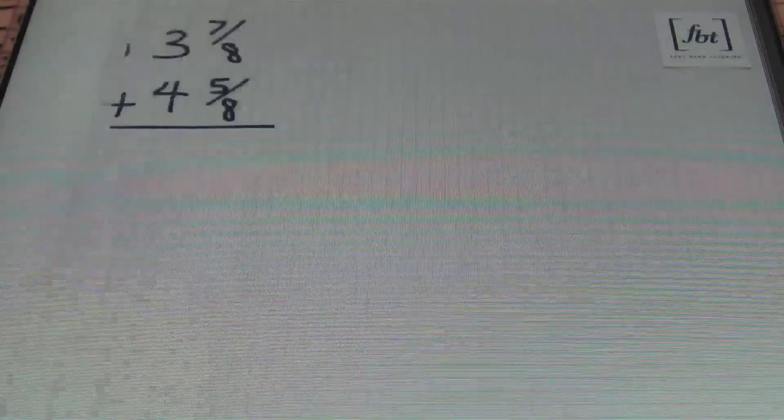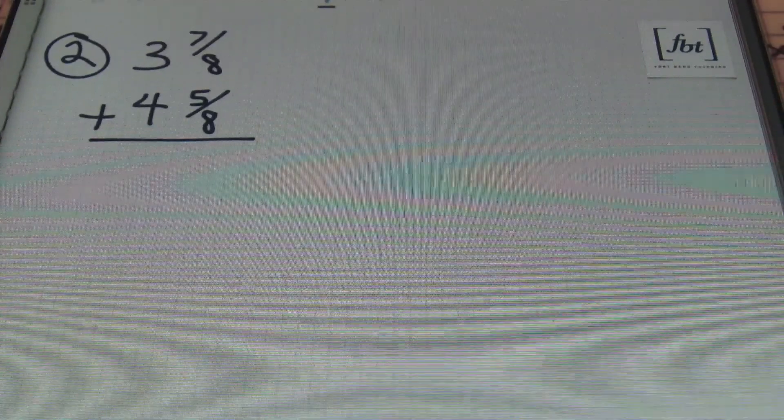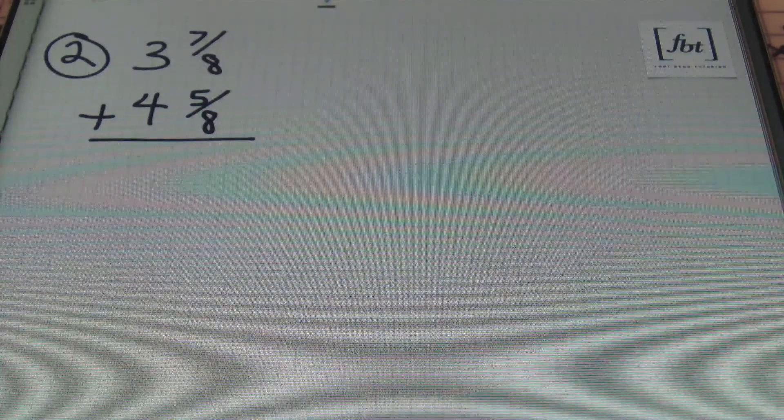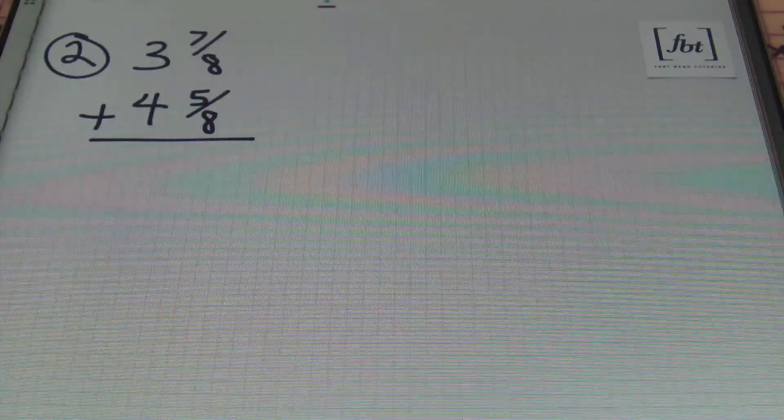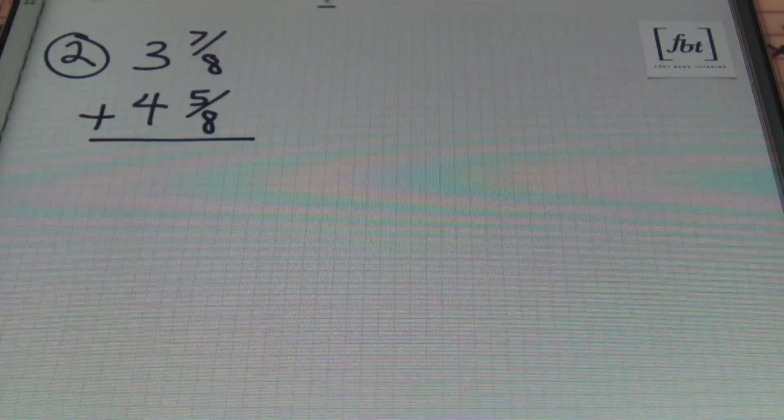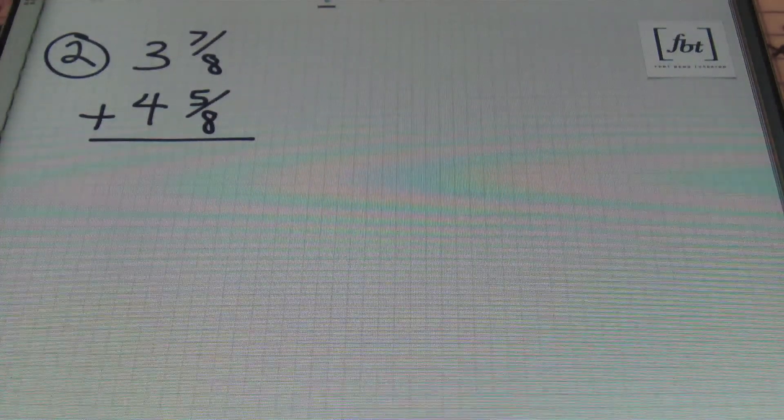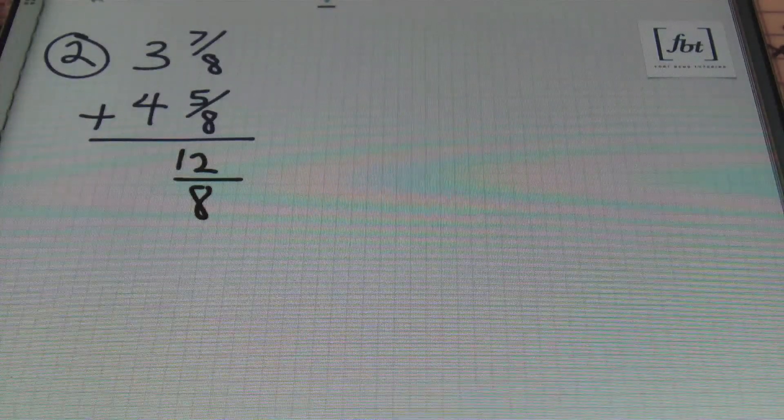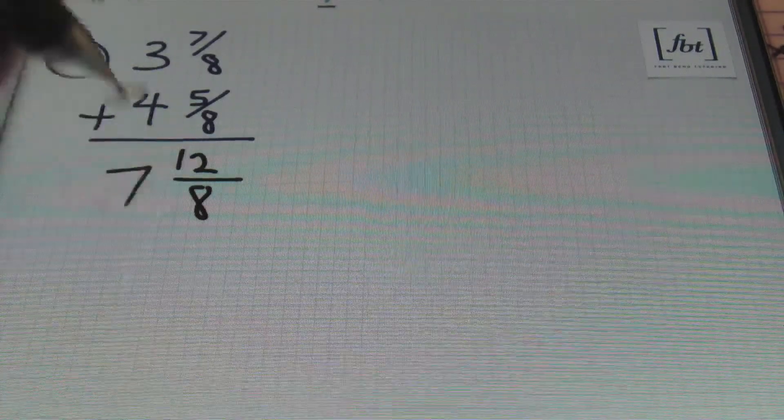Alright let's check out problem number 2 now. In problem number 2 we have 3 and 7/8 plus 4 and 5/8. So once again I want to make sure that my fractions have a common denominator and they do. So go ahead and just add the numerators together. So 7 plus 5 will give me 12 over the denominator of 8 and then I have 3 plus 4 which is always 7.